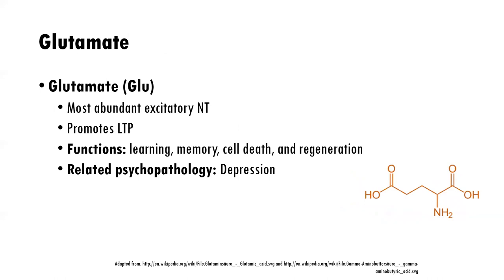Glutamate is the most abundant excitatory neurotransmitter. It promotes something called long-term potentiation — the ongoing growth of neurons and synapses. If we have long-term potentiation, we have ongoing growth of neuron synapses and volumetric increase. Long-term depression is the opposite — the death of neurons and synapses over time leading to volumetric decline. Note that long-term depression is not the same as clinical depression, though if long-term depression of neurons is occurring, you'll see clinical depression associated with it. Its functions include learning, memory, cell death and regeneration. You may be familiar with S-ketamine, a version of ketamine that has a major role in the glutamate regulatory system.